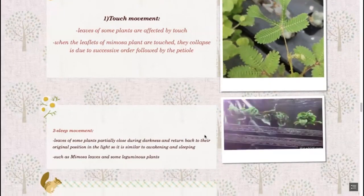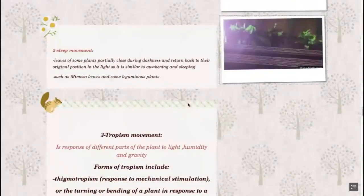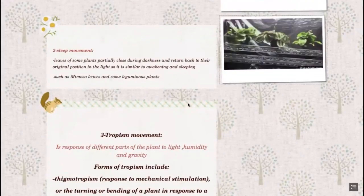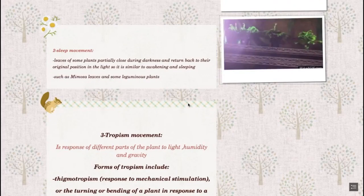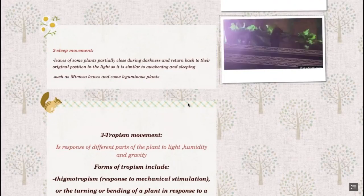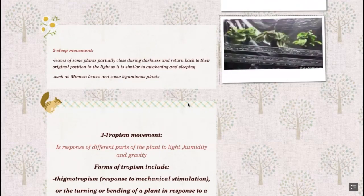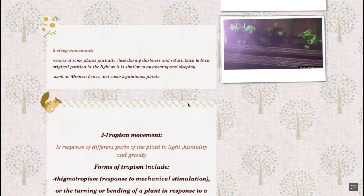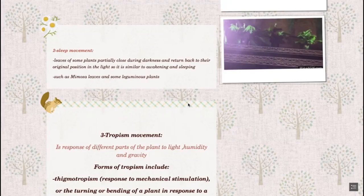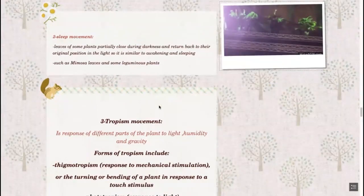Number two: sleeping movement. As we can see, when there is dark, and once there is light the plant begins to open or stand up - its leaves open. We notice that when it becomes dark, wilting or collapsing occurs again. Sleeping movement: leaves or some plant parts close and open according to the light.